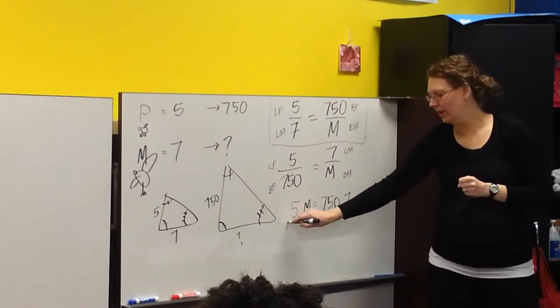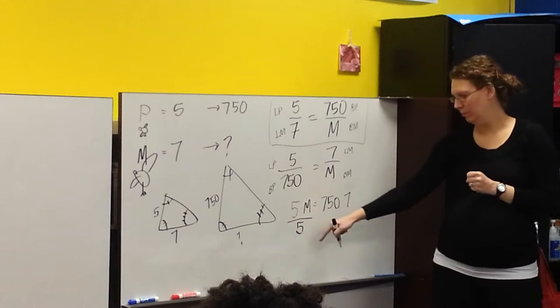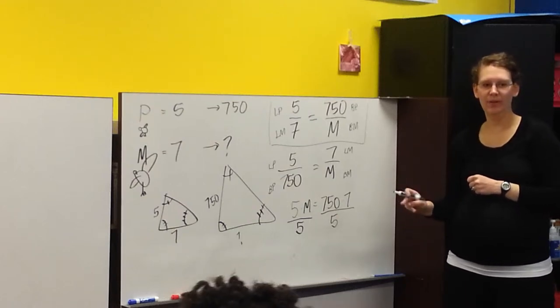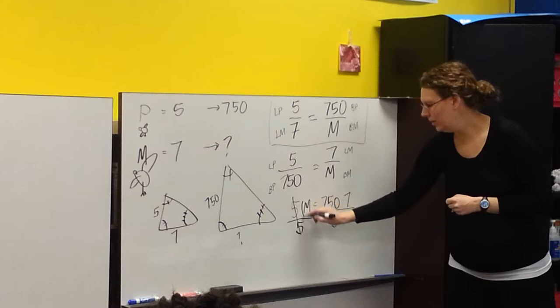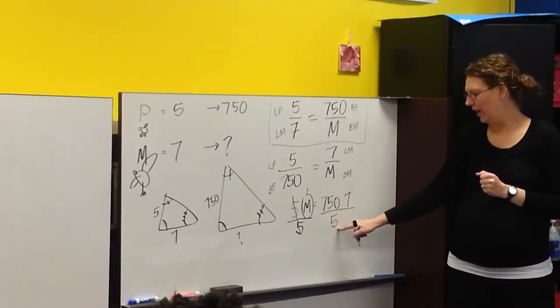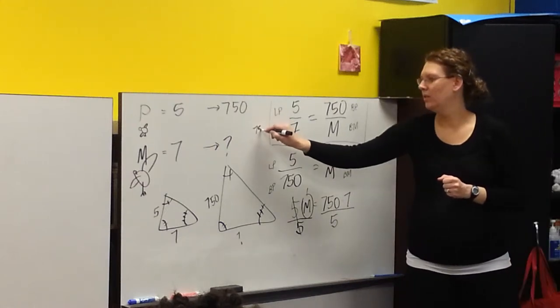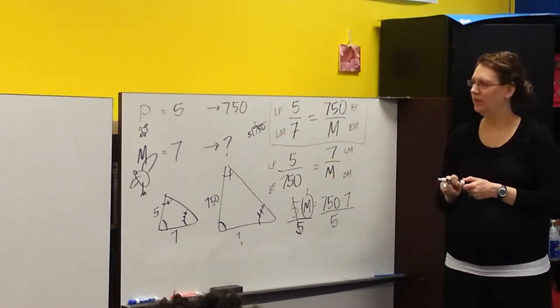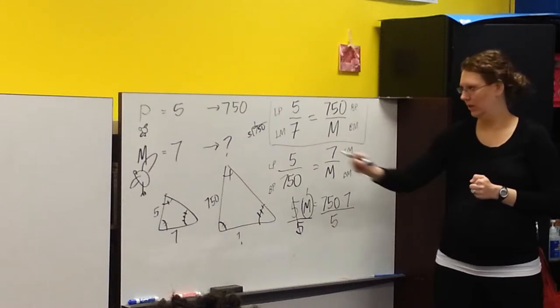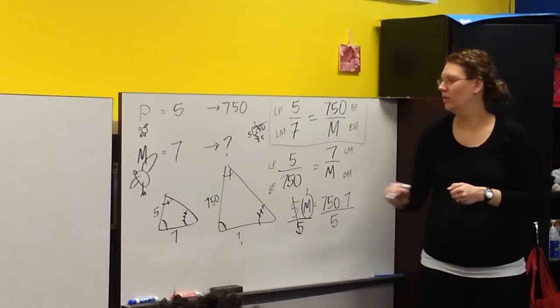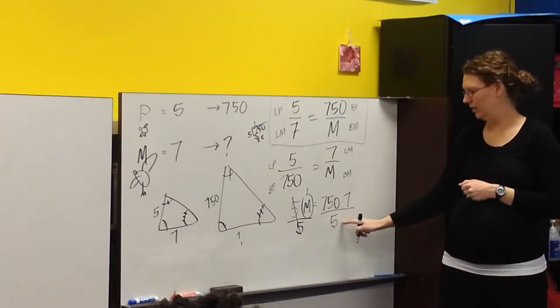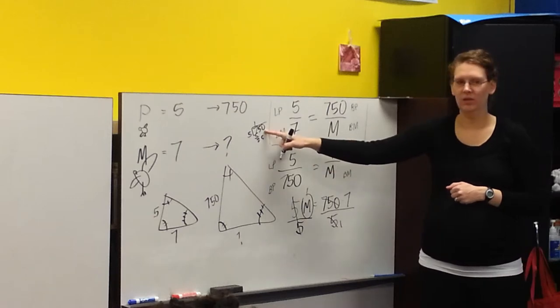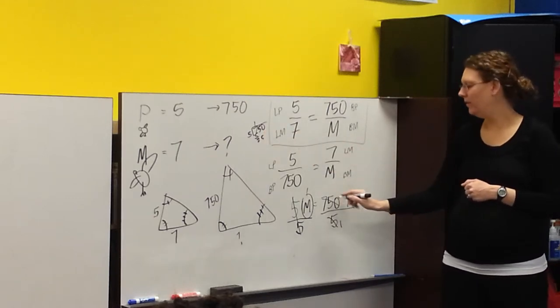So just pull off the five, times five, pull it off. Pull it off over here. Now can I reduce before I get going? Devon, reduce for me here. So these cancel, I'm left with just one m. How many fives are in 750? One fifty. There you go, one fifty.